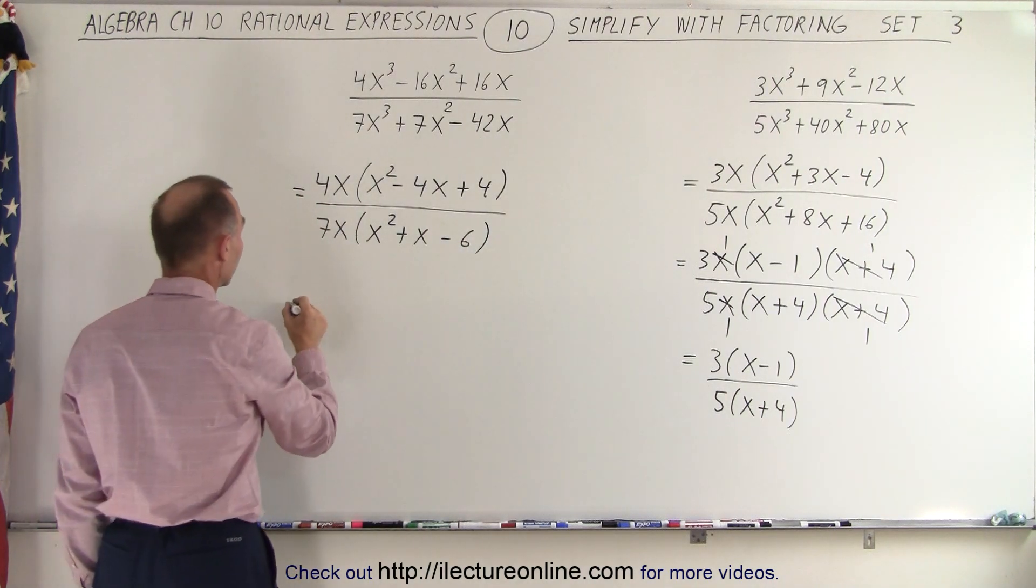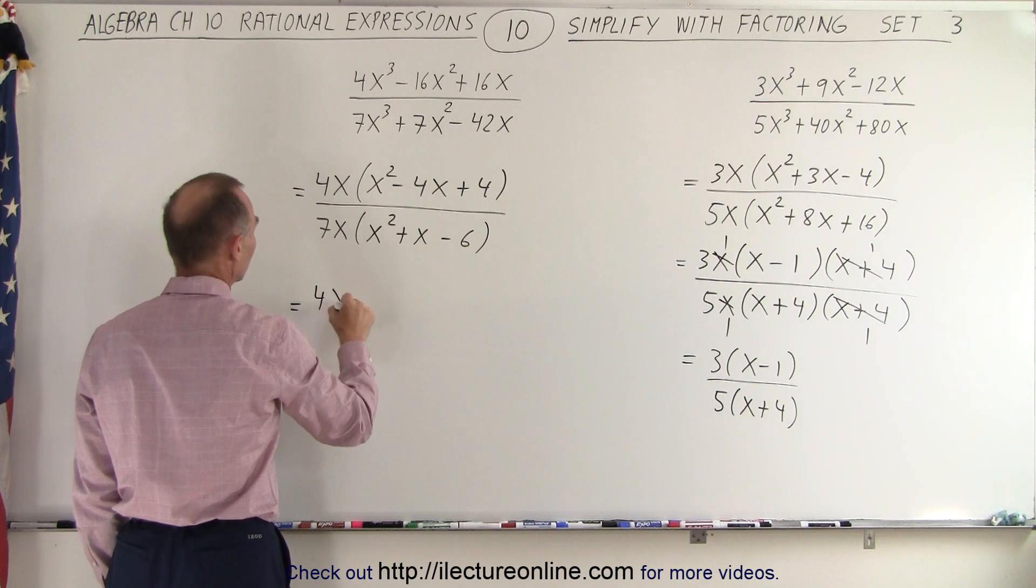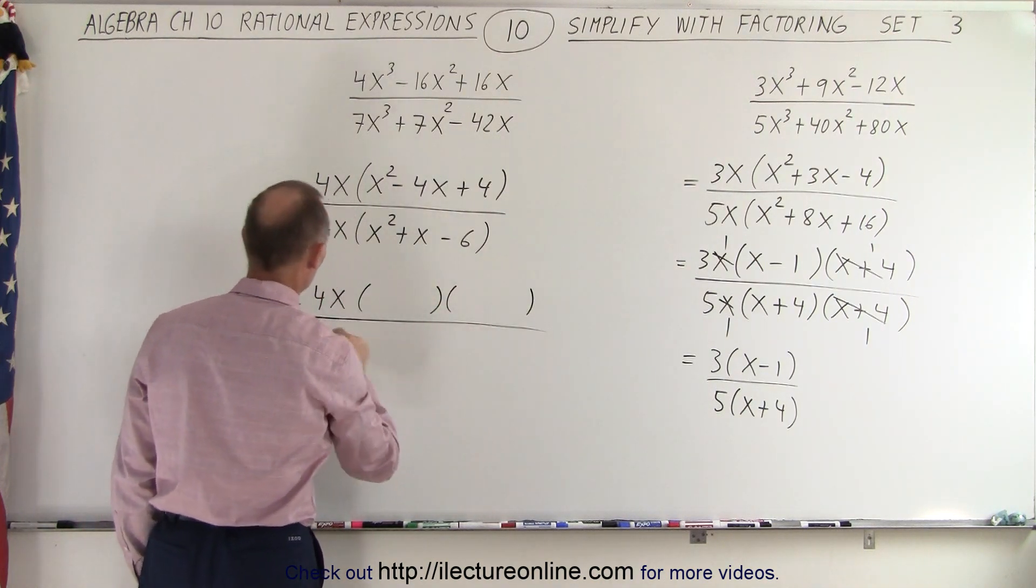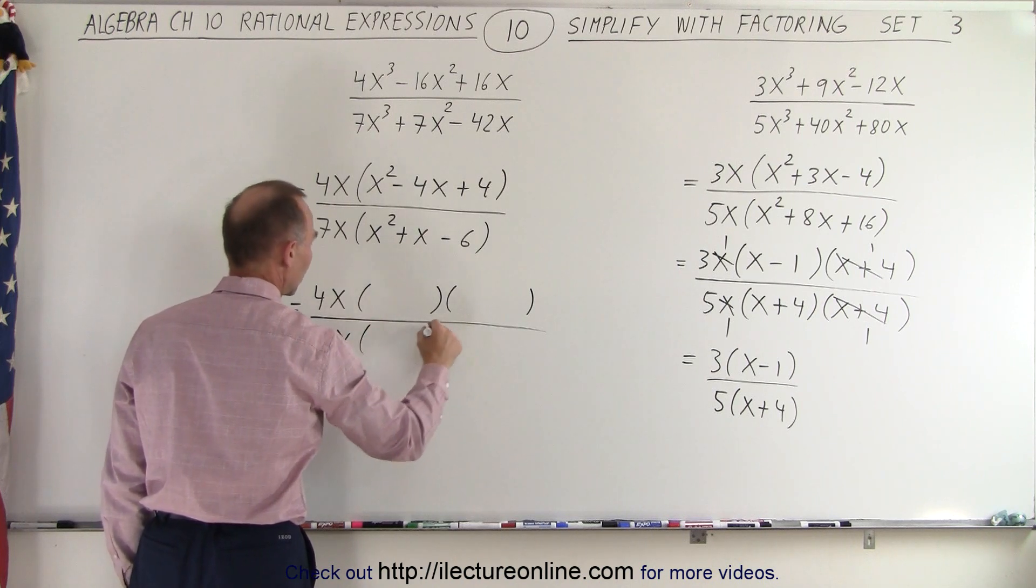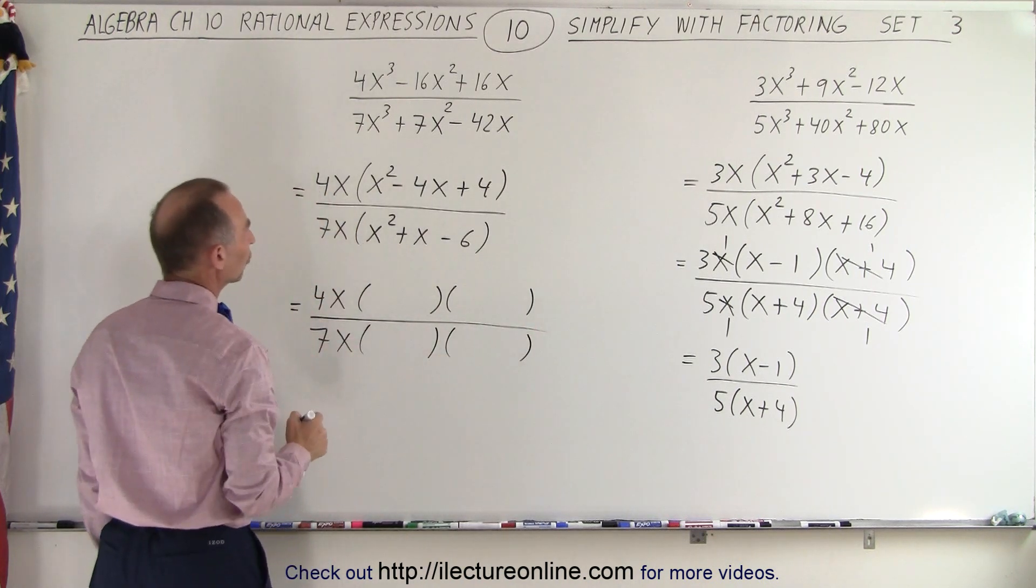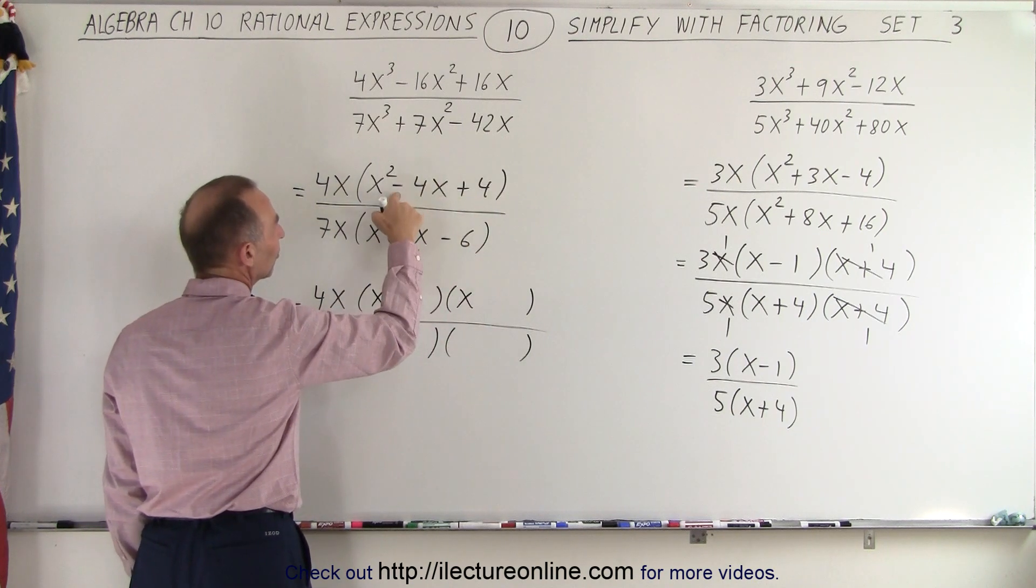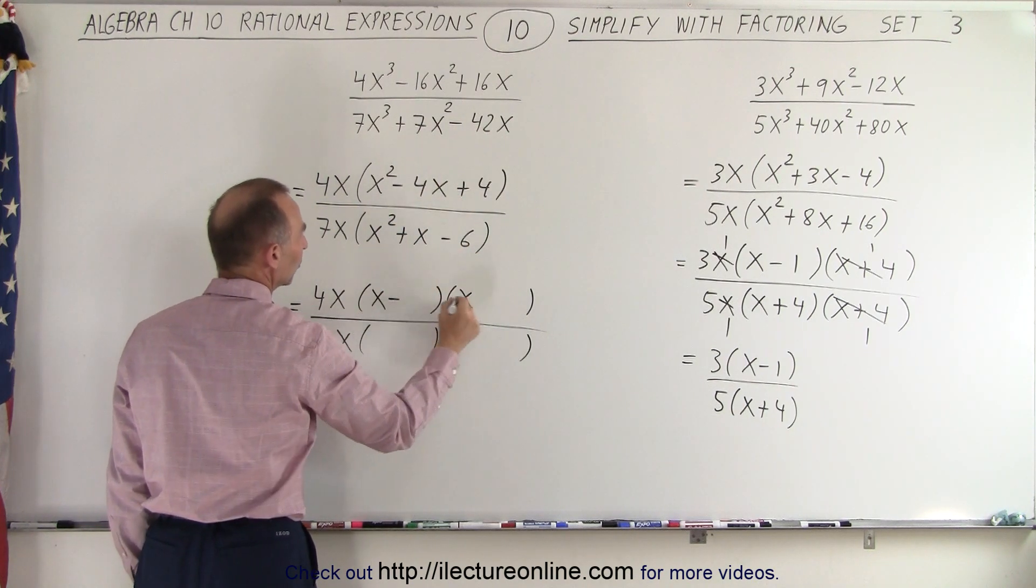So in the numerator, we end up with a product of two binomials. And so will we, in the denominator, a product of two binomials. For the numerator, we start with an x and x. For the signs, since this is negative and this is positive, they both must be negative.